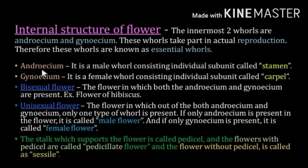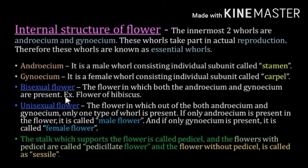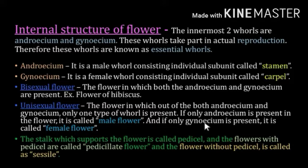The androecium is a male whorl consisting of individual subunits called stamens. The gynoecium is the female whorl consisting of individual subunits called carpels. A bisexual flower is one in which both the androecium and gynoecium are present — for example, the hibiscus flower. A unisexual flower contains only one type of whorl: if only androecium is present it is a male flower; if only gynoecium is present it is a female flower.